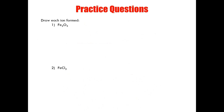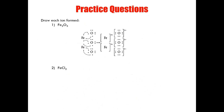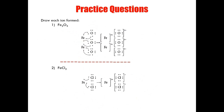Here are two more practice questions showing the formation of ionic compounds using Lewis structures. Example one is iron(III) oxide — there are two iron ions for every three oxygen ions, and to the left you have the representation for the movement of electrons, which is jarring but important for understanding why we have three oxygen for every two iron. The example beneath is iron(II) chloride, an easier example because there is only one iron ion for every two chlorine ions, making the electron movement quite easy to understand.